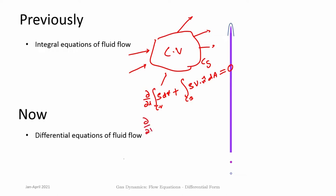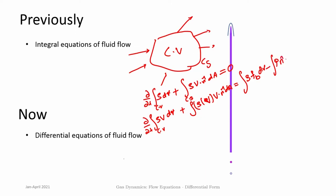If you consider conservation of momentum, rho v is the momentum and momentum within the control volume, if it has to change it is due to the rho v which is the momentum and v dot n dA which is the momentum flux. This can be due to various forces: body forces Fb integrated over the volume, and surface forces which are mainly the pressure forces and shear forces Pn dA. This is the statement of Newton's second law that change in momentum is equal to the sum of forces that come onto the body.